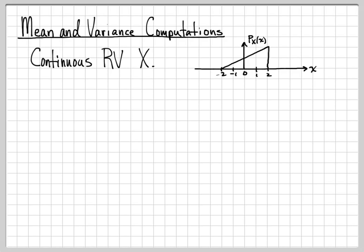Its probability density function looks like a triangle. If you compute its area, first of all, the area is one. One half base times height is the area of a triangle, so it integrates to one, just like it needs to for a PDF. The equation for this probability density function is one eighth times the quantity x plus two. You can check that pretty easily.